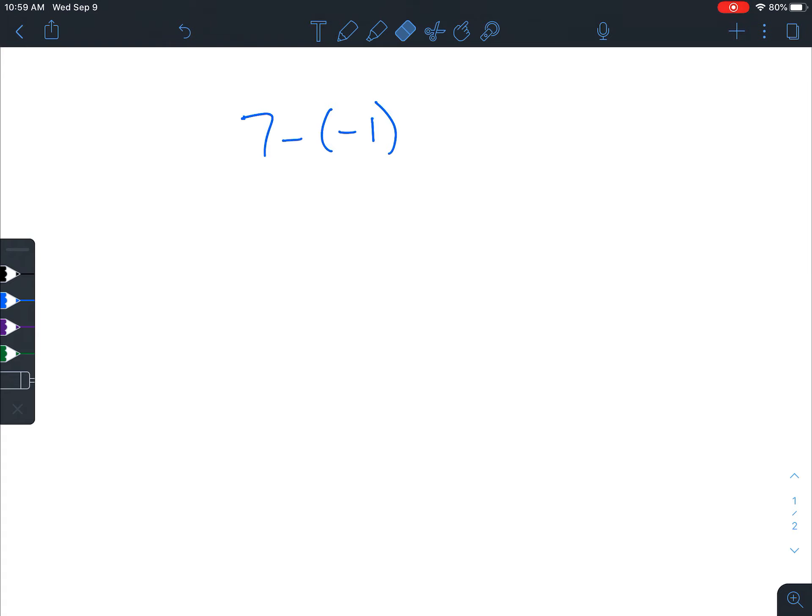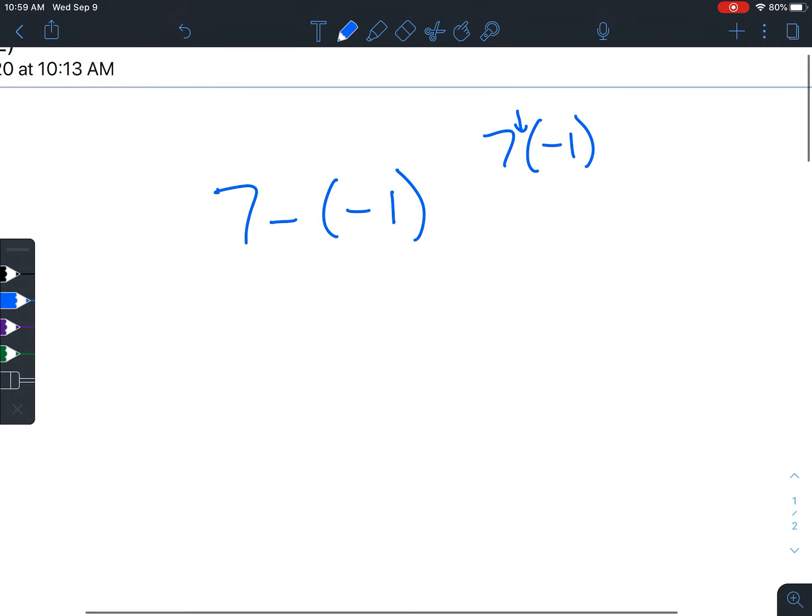And notice the difference between this and something like that. Do you see how there's nothing there? That would mean multiplication. And this one has a minus sign, so it means there's subtraction there.